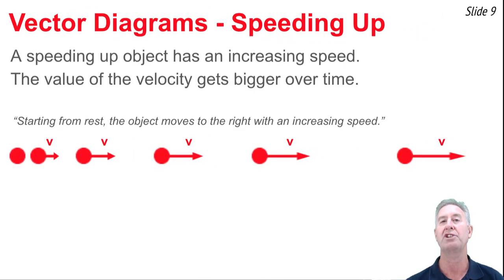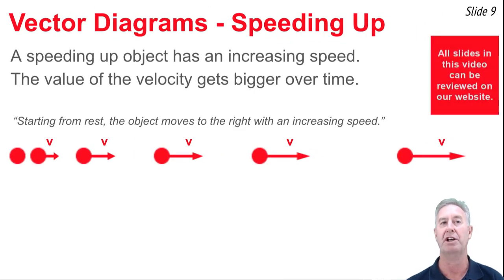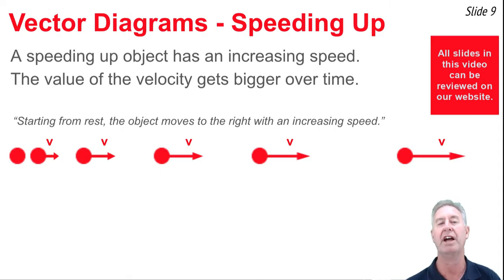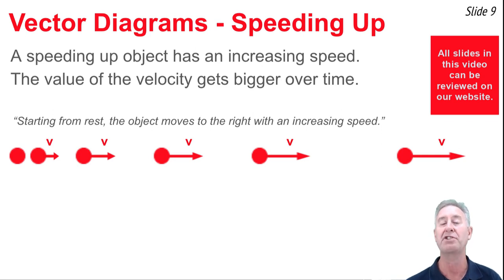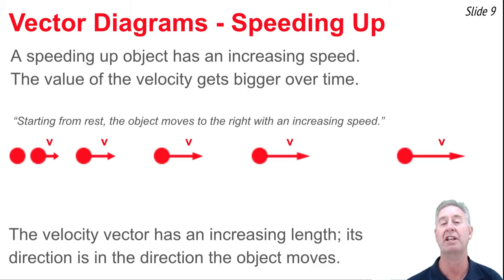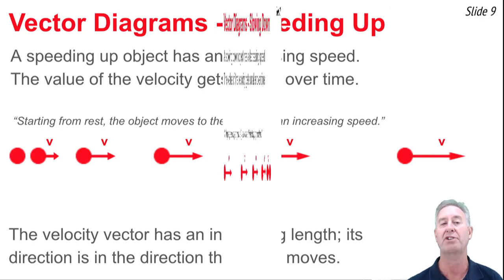Now let's look at a changing speed situation — a speeding up object. You'll notice that over the course of time the arrows are getting longer. The object's moving from left to right, so the velocity arrow points to the right. Initially it's zero and finally it's a lot bigger, so that's a speeding up object. We represent the direction and size of the velocity by the length and direction of an arrow.